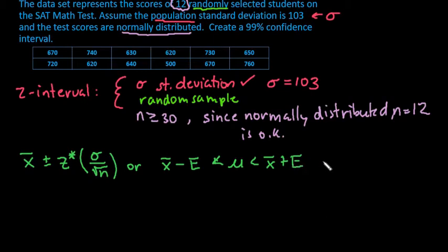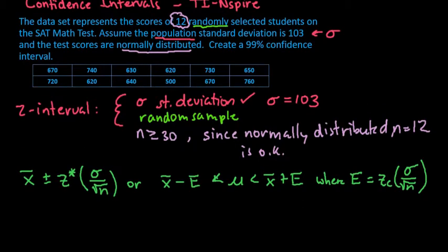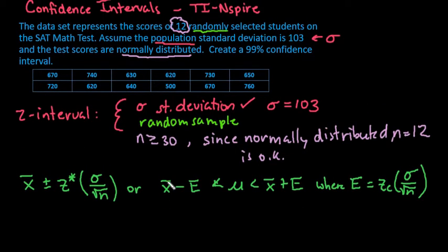Where the error is equal to z-critical times sigma divided by the square root of n. I'm just giving the two most commonly used formulas I've seen in textbooks. So yours may differ slightly, but just so that you understand the formula.